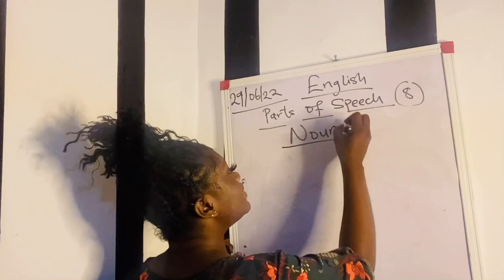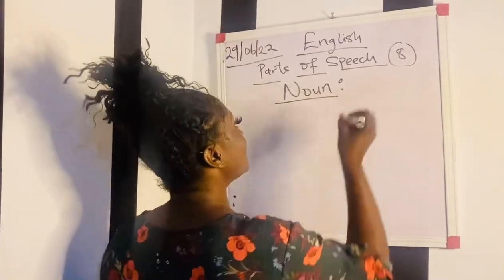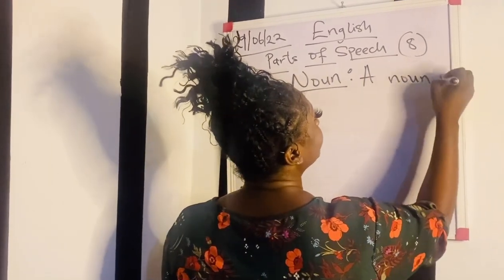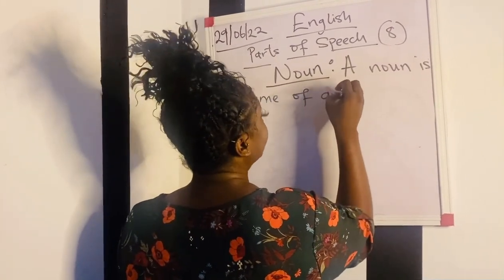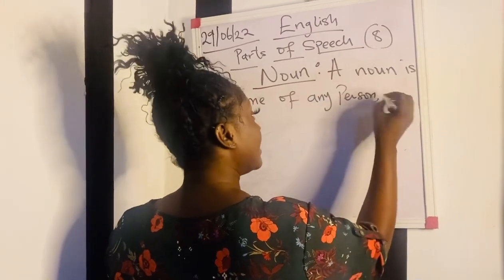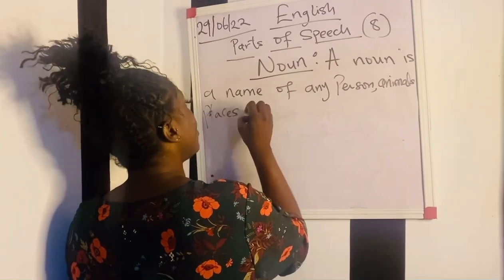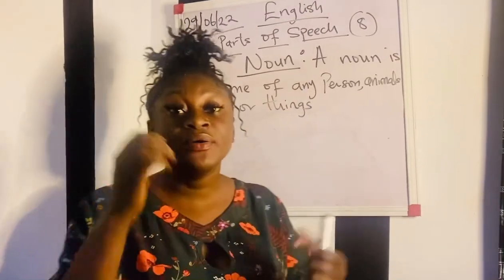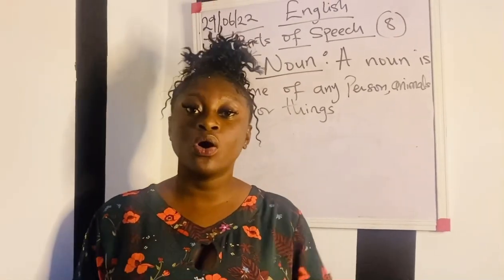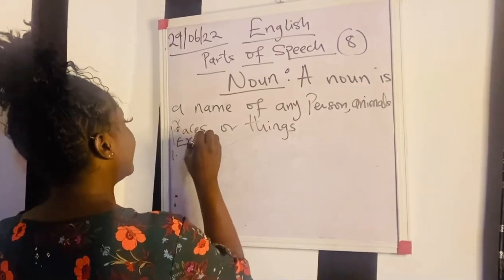Noun. What is a noun? A noun is the name of any person, animal, place, or thing. A noun is the name of any person, animal, place, or thing.